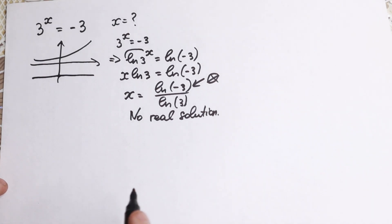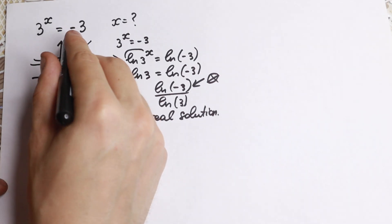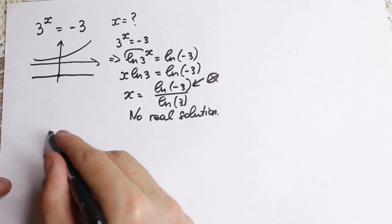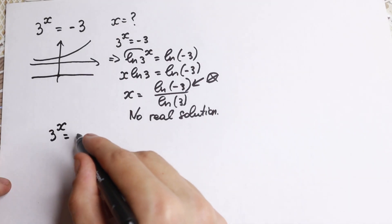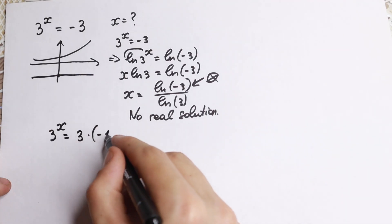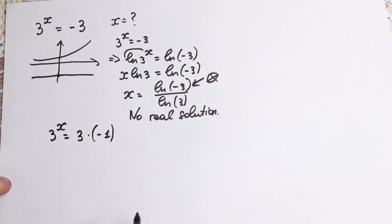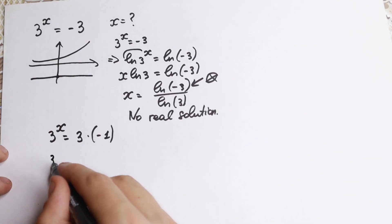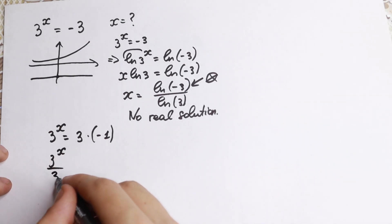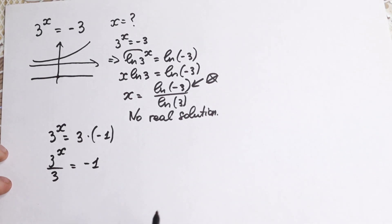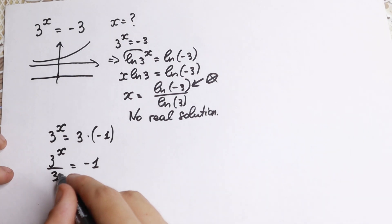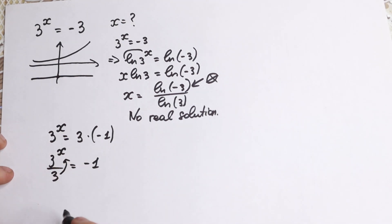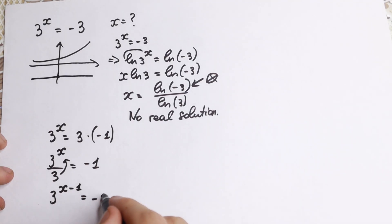First, I want to write minus 3 in another way. So we have 3 to the x equal to 3 times minus 1. Dividing both sides by 3, we get 3 to the x over 3 equal to minus 1. Applying the power rule, we get 3 to the power x minus 1 equal to minus 1.